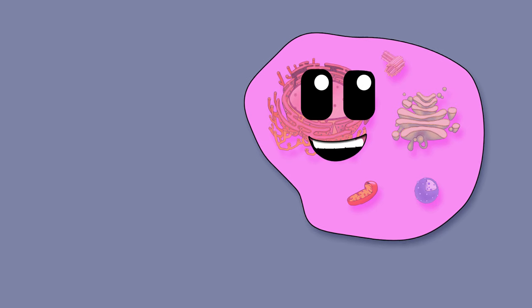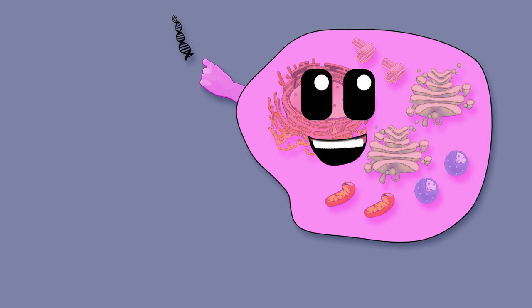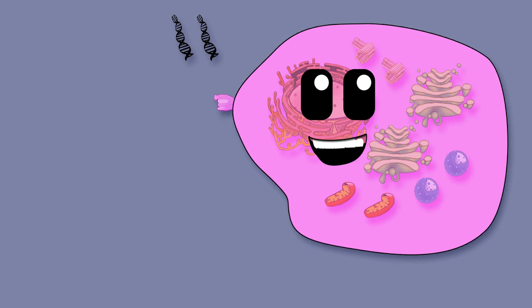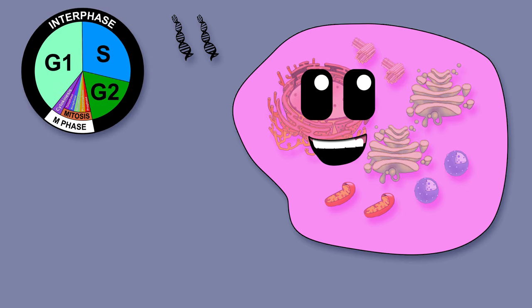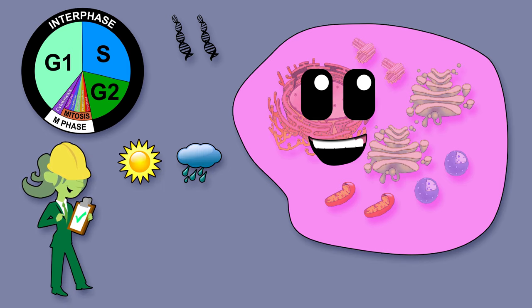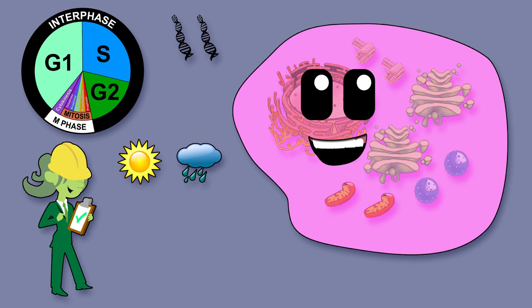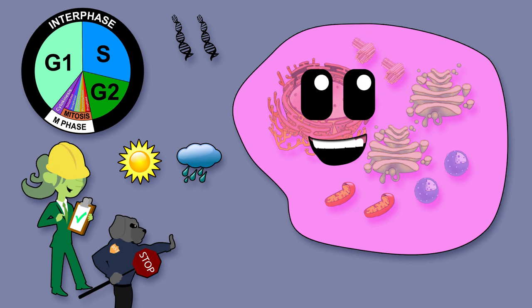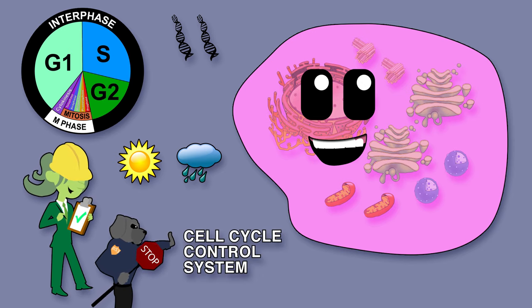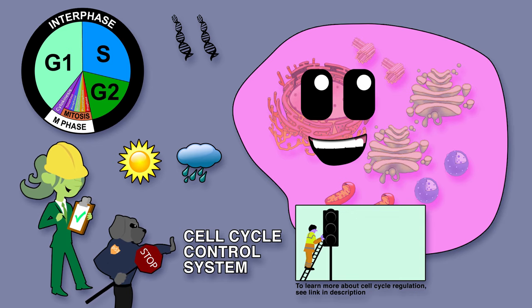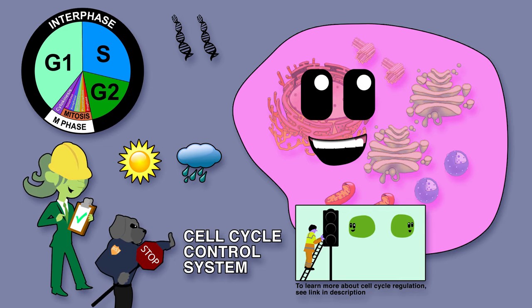Most cells need more time to grow and double their organelles and biomolecules than they need to duplicate and divide up their chromosomes. The gap phases G1 and G2 provide the time needed for this growth, and also give the cell time to assess whether the environment is favorable for division, and whether all the preparations for cell division have been appropriately completed. Eukaryotic cells have a complex system of regulatory proteins, called the cell cycle control system, to make sure that cell division occurs correctly and only when appropriate.